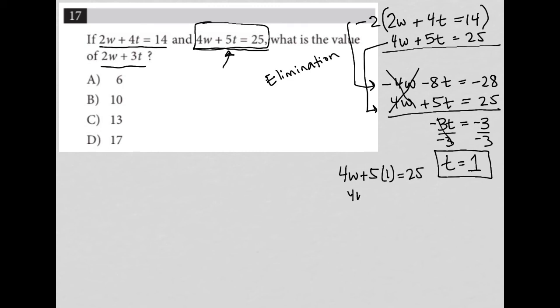So that means 4w plus 5 equals 25. I can subtract 5 from both sides. And I'm left with 4w equals 20, divide by 4. And I have w equals 5. So now I know what my w value is. So t equals 1 and w equals 5.